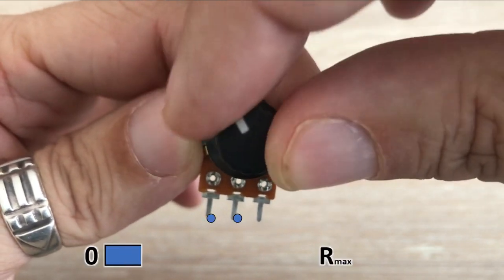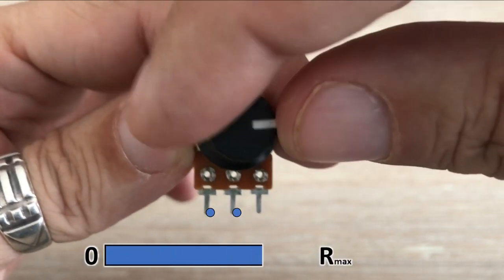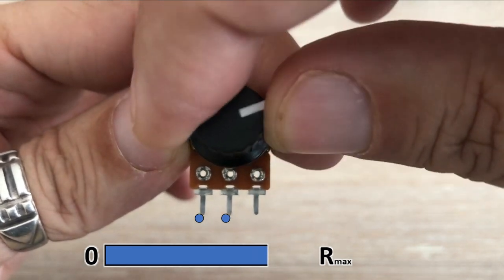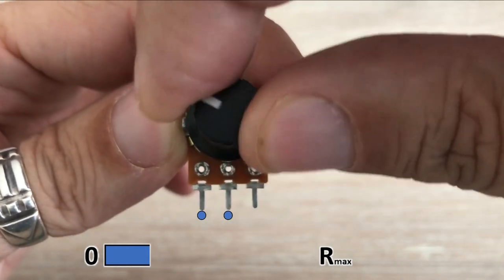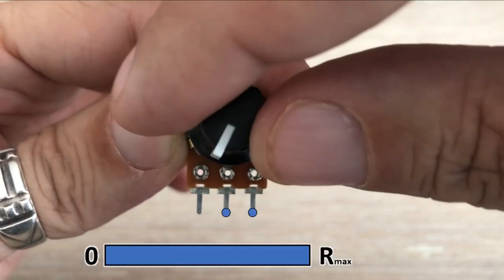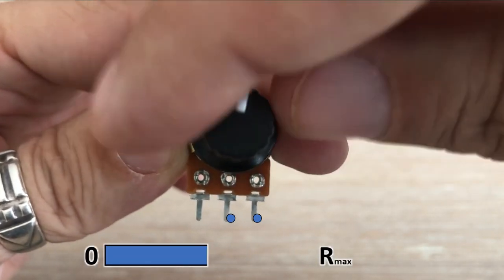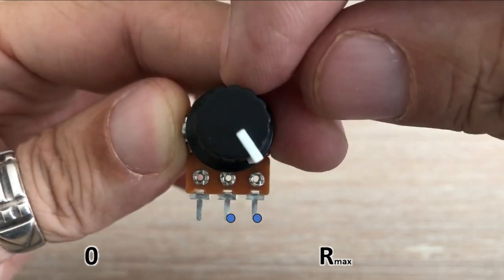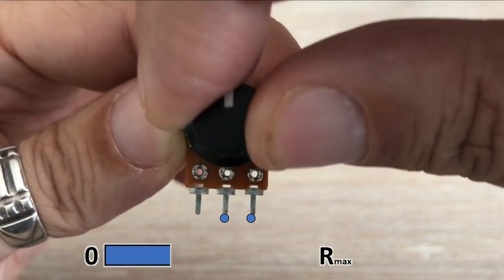If we connect input and in terminal, then the resistance would increase when we turn the shaft clockwise and decrease when we turn it counterclockwise. When we connect input and ground terminals, the resistance would decrease when we turn it clockwise and increase when we turn it counterclockwise.